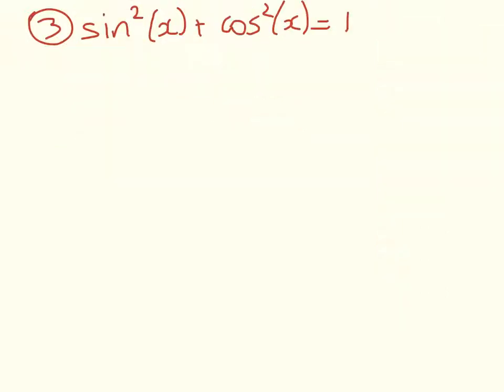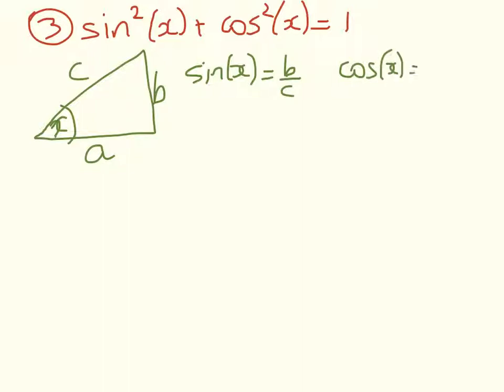On to the last one. This is a really crucial relationship between the square of sine and the square of cosine. So we're looking to prove that sine squared of x plus cosine squared of x is equal to 1. So I draw my triangle. Here's x. I'm going to put on three sides: a, b, and c. Now I'm doing this one a very slightly different way from Delta. We are going to use Pythagoras in this proof. So we have sine of x is equal to b over c. Cosine of x is equal to a over c. So let's start on the left-hand side.